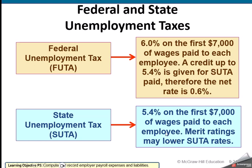SUTA is very similar, but at a much higher percent — it depends on the state, the company's history of layoffs, and the industry. It may also apply to more than $7,000 in wages. In this example, state unemployment tax is 5.4% of the first $7,000, but it could be more or less depending on the circumstances.